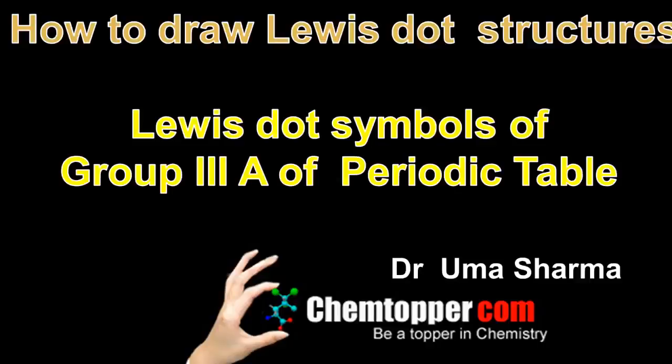Hello everyone, so we are back again with chemtopper.com. As a part of Lewis dot structures series, in this video, we are going to learn how to draw Lewis dot symbols of group 3A elements of the periodic table.